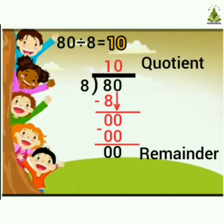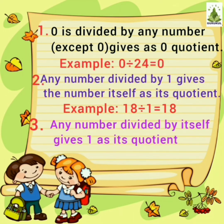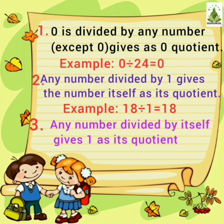Remember, while dividing, the divisor is subtracted from the dividend the greatest possible number of times. That is why the remainder is always smaller than the divisor. As we have learned division, remember the following points. First, 0 divided by any number except 0 gives 0 as quotient — for example, 0 divided by 24 is 0. Remember, a number cannot be divided by 0. Any number divided by 1 gives the number itself as its quotient — for example, 18 divided by 1 is 18. Any number divided by itself gives 1 as quotient — for example, 26 divided by 26 is 1.